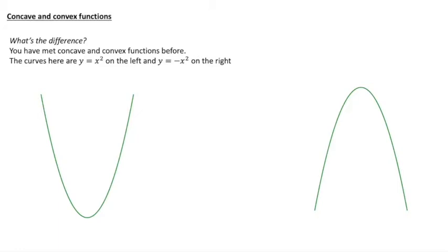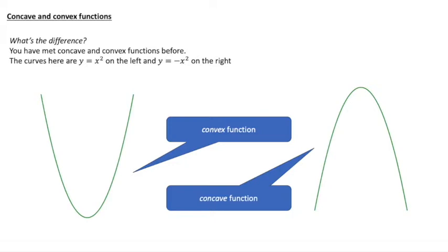First we're going to look at what concave and convex functions are. What's the difference? Well, you have met them before. We can see a curve of y equals x squared on the left and y equals minus x squared on the right, at least the shapes of them. And there's an obvious difference between them. Apart from them being upside down in terms of values, the shape of them is upside down compared to each other. So it turns out that x squared is a convex function and minus x squared is a concave function.